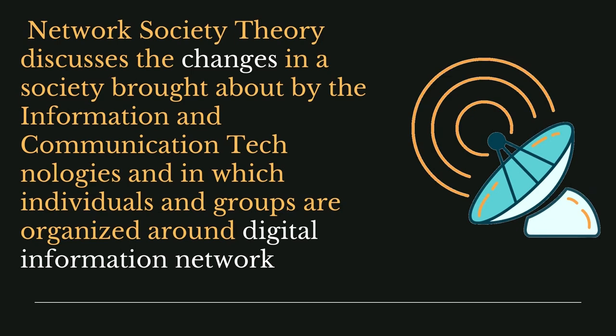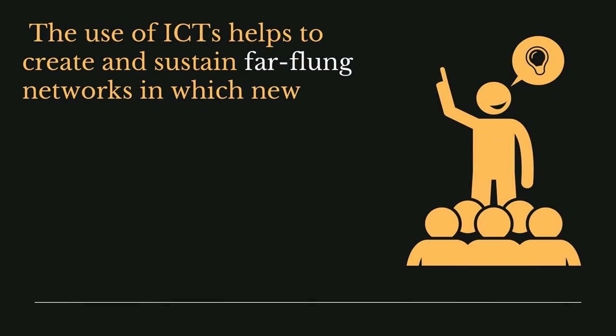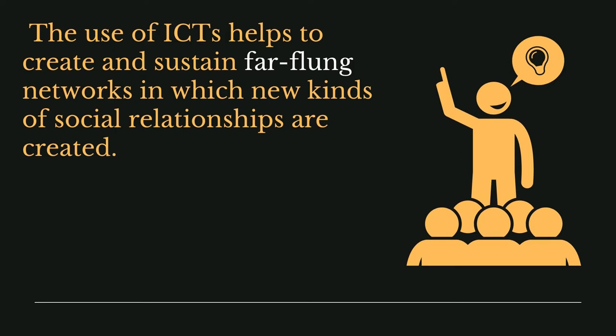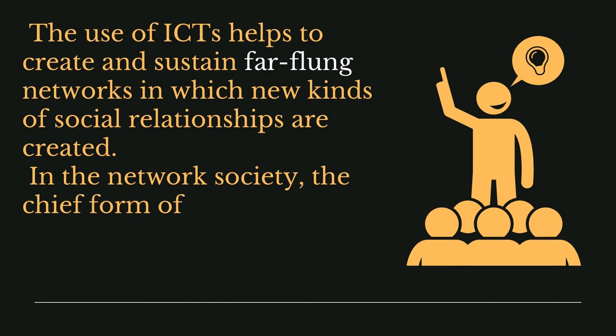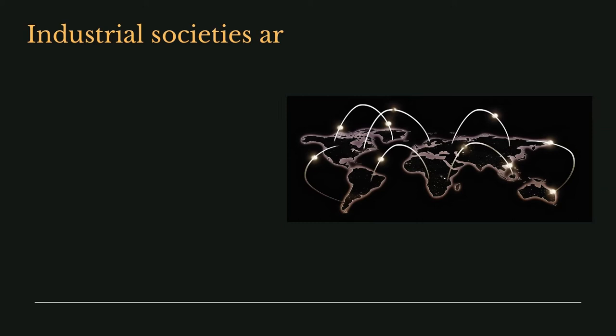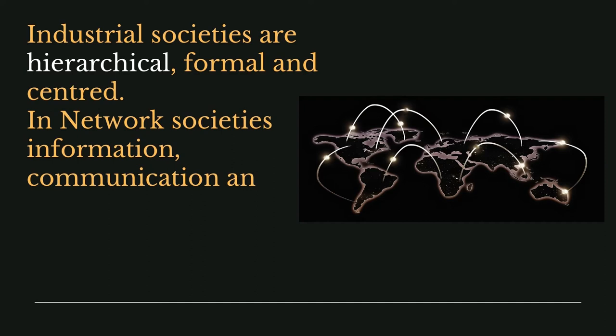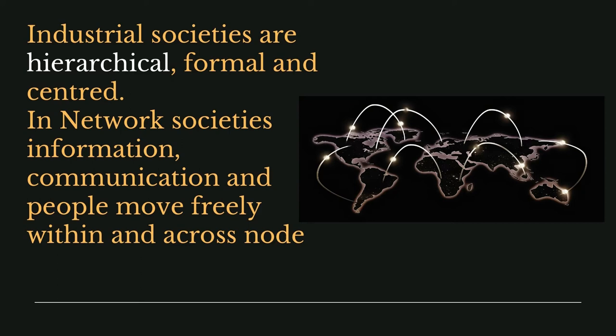Widespread internet connectivity brings changes for individuals and communities. The use of information and communication technologies helps to create and sustain far-flung networks in which new kinds of social relationships are created. In the network society, the chief form of power is control or influence over communication. Industrial societies are hierarchical, formal, and centered. In network societies, however, information, communication, and people move freely within and across nodes.